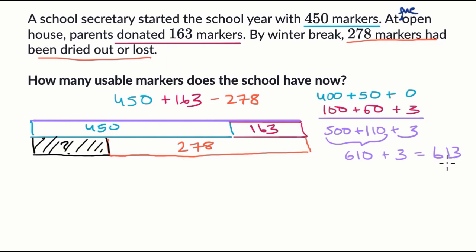Well, we could use a similar technique. We could expand out 613 is 600 plus 110 plus three ones. And we're going to subtract out 200, seven tens and eight ones. So minus 200, subtracting seven tens and subtracting eight ones.